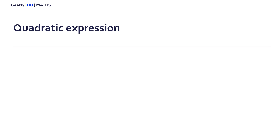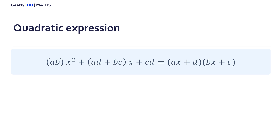The first one is the formula for factoring quadratic expressions. In this case you have to find two numbers a and b that multiplied give you the first term of the expression, and two numbers c and d that multiplied give you the third term. When you multiply a and d, and also b and c, and then add them together, you must get the second term of the expression.